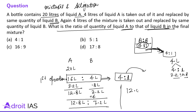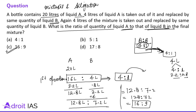The ratio of liquid A to liquid B is 12.8 to 7.2, which is 128 to 72. Both numbers are divisible by 8, giving the final answer of 16 to 9. Just follow the instructions of the question and you can solve it correctly.